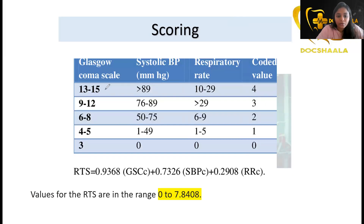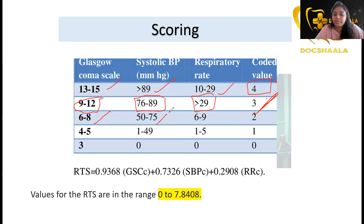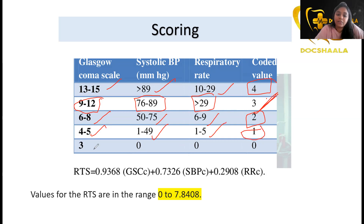The score is calculated as follows: when Glasgow Coma Scale is 13–15, systolic BP is more than 89 mmHg, and respiratory rate is 10–29, the coded value is 4. GCS 9–12, BP 76–89, RR more than 29 gives a code of 3. GCS 6–8, BP 50–75, RR 6–9 gives code 2. GCS 4–5, BP 1–49, RR 1–5 gives code 1. GCS 3, BP 0, RR 0 gives code 0.